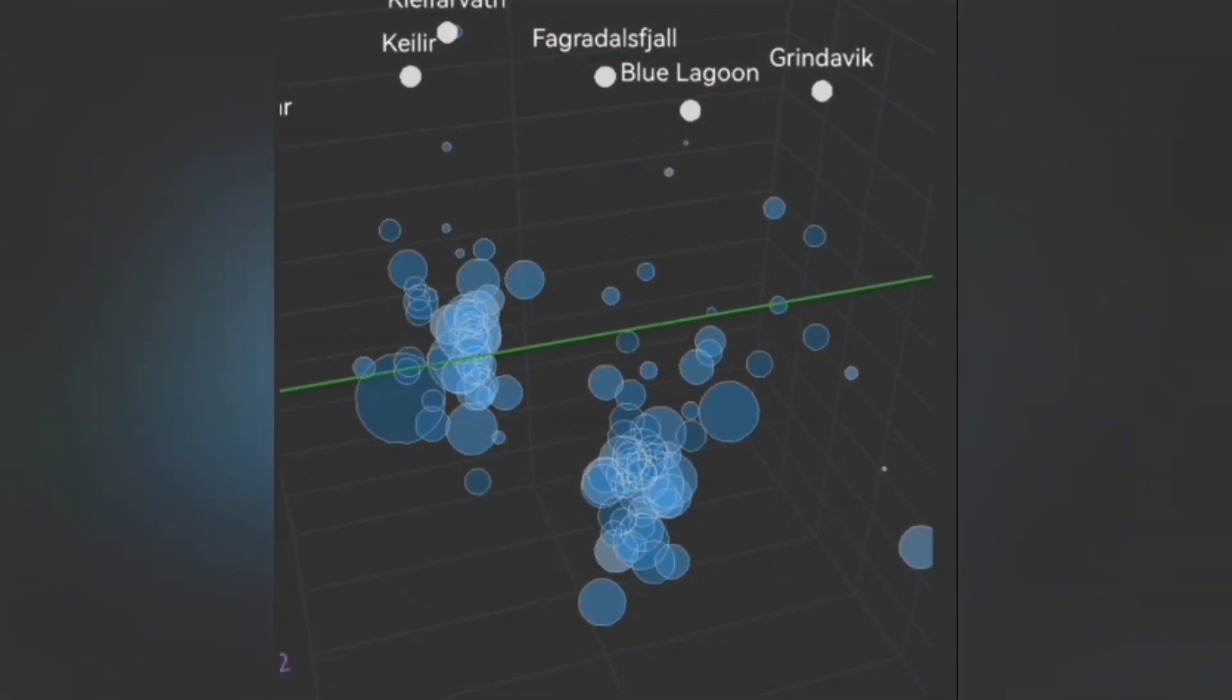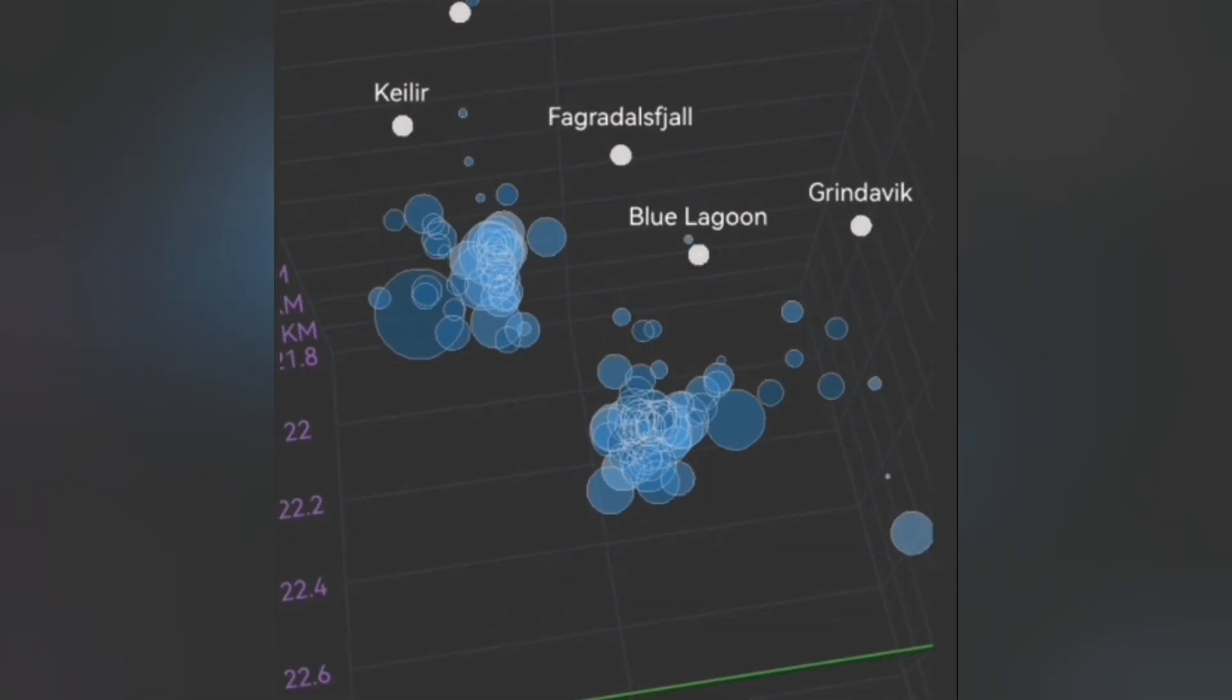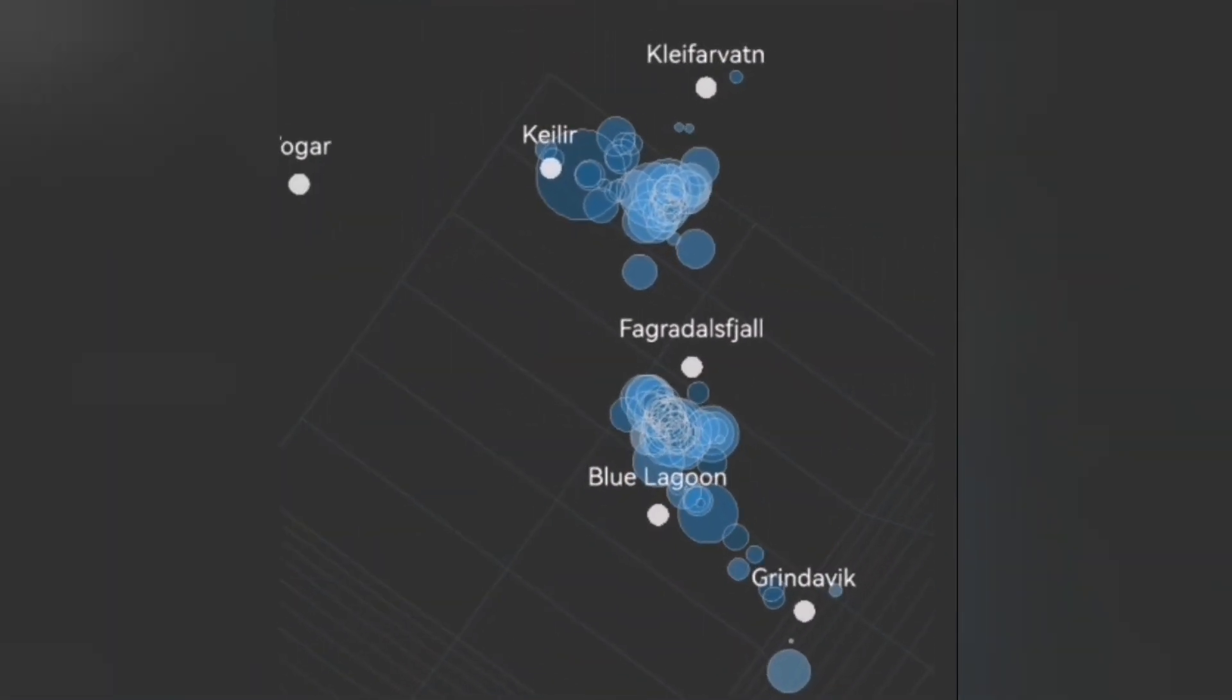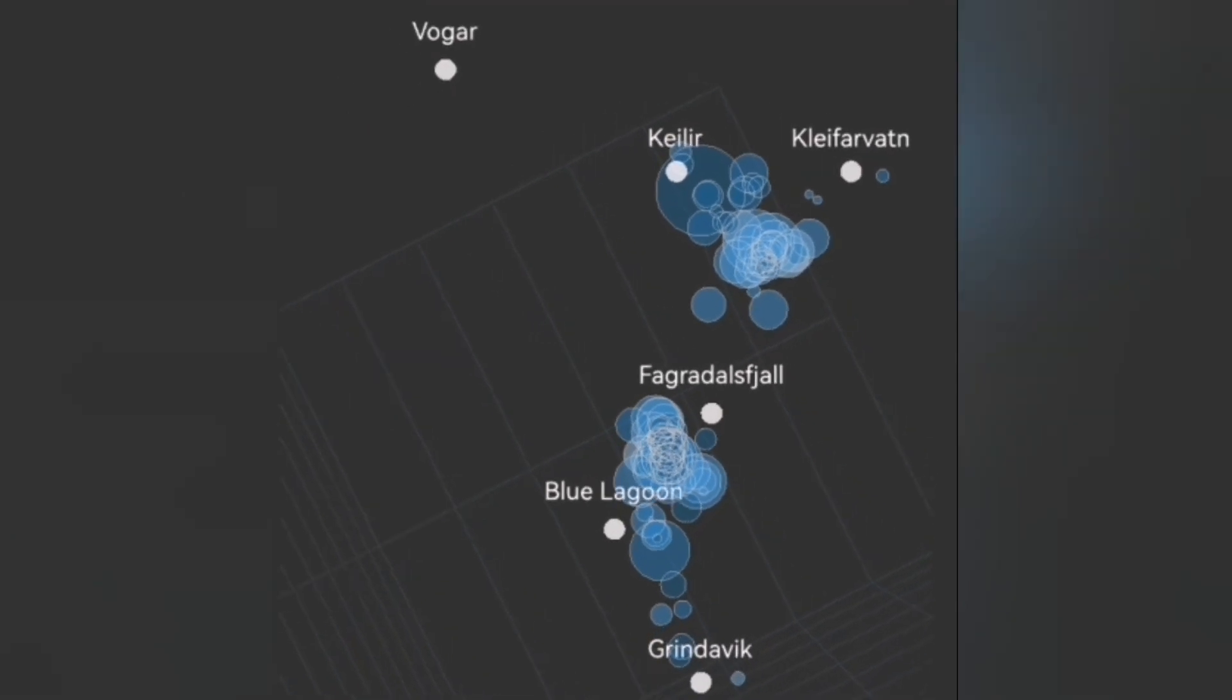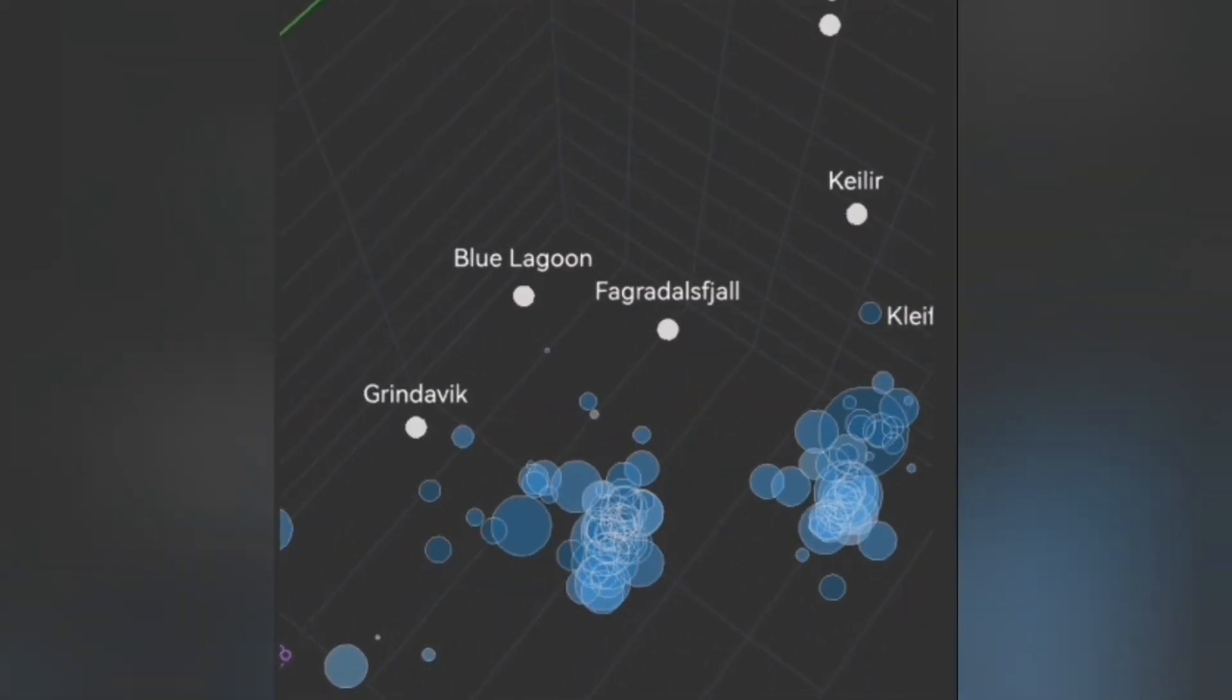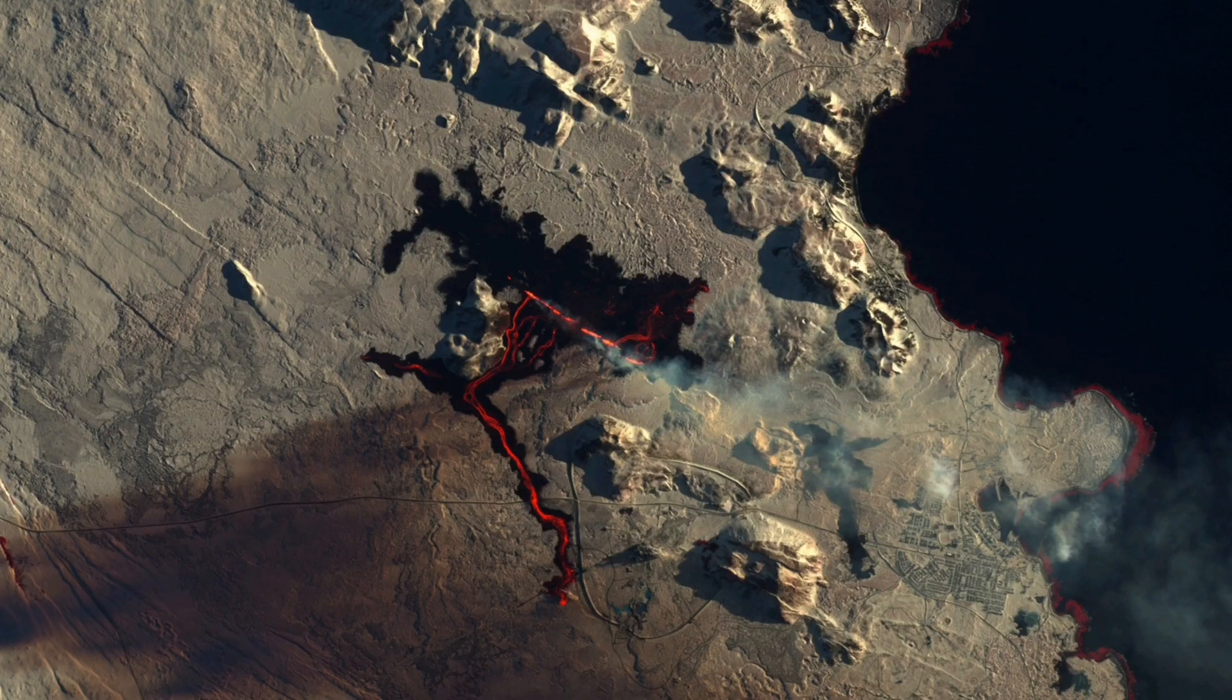These earthquakes are not anywhere near the Blue Lagoon or Svartsengi. They're happening to the north of this current eruption again, as you can see in the satellite image.